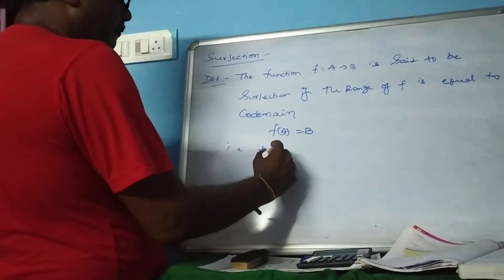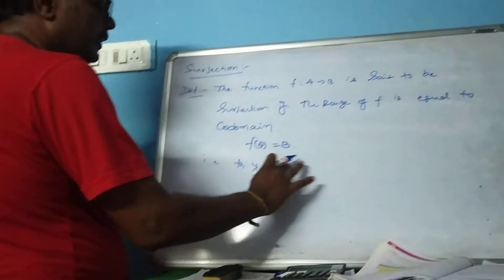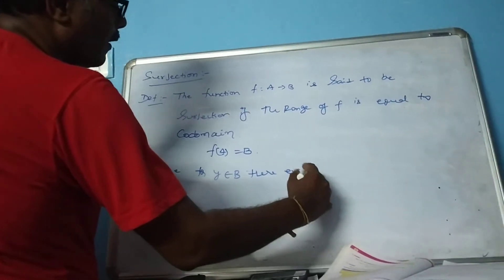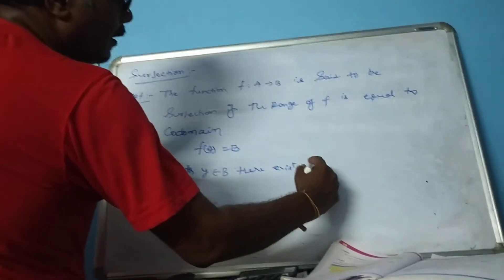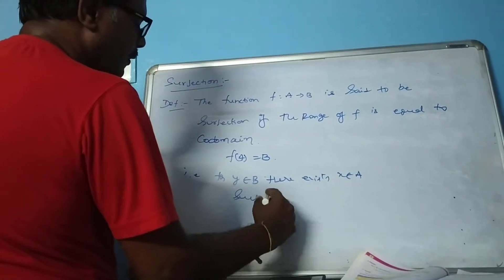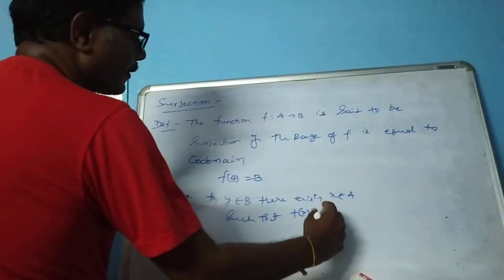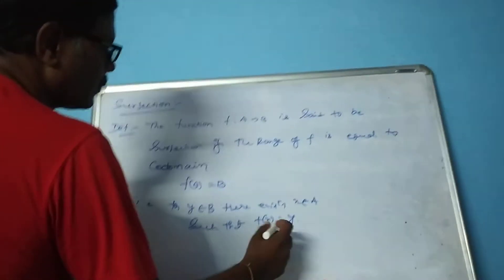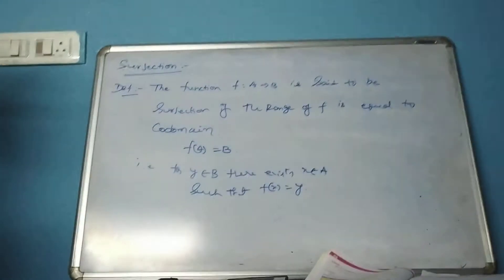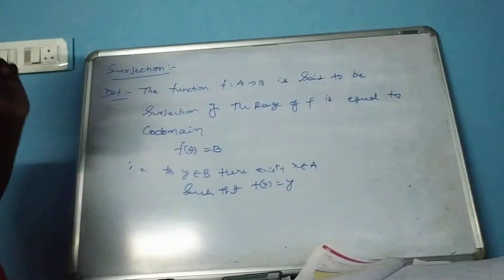That means for every y belonging to B, there exists x belonging to A such that F of x is equal to y. Then we say that this is a surjection.